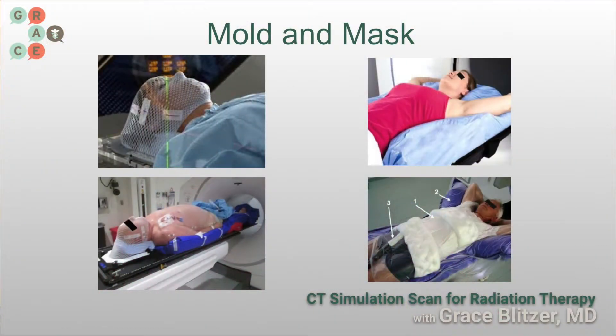So getting a simulation means you're going to make a mold on myself? Good question — sometimes, it depends on what part of your body. If you were getting radiation to your brain or to your head or neck, we would make a mask. If you were getting radiation to the lungs, we often will make a mold. The goal with all of this is to get a really good image of you in a position that we can treat day after day, so every day you'll be in the exact same position. Can I get radiation before getting a simulation? You can't — we use that to plan your radiation.